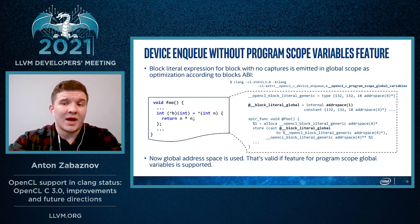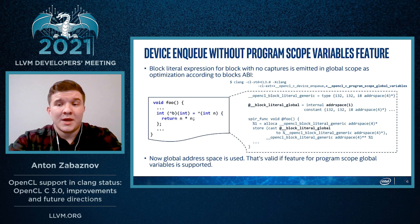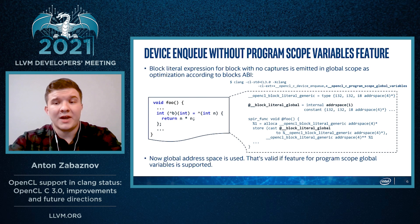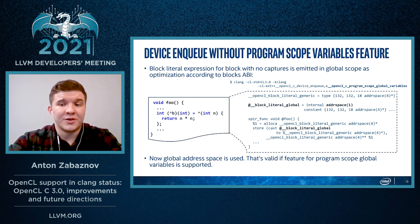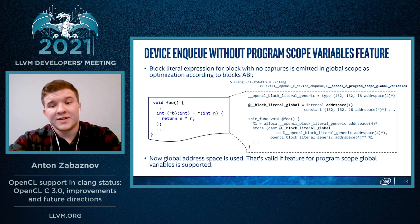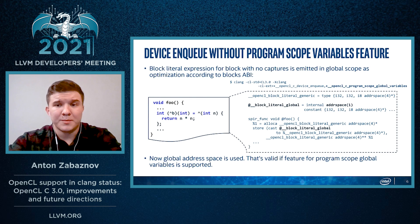Due to existing ABI, a block literal for a block with no captures is emitted in global scope as an optimization. In OpenCL, the global address space is used for such block literals and this is actually valid. However, in OpenCL C3, support of global variables in the global address space is an optional feature, and if that feature is not supported, that is actually an incorrect IR emission.